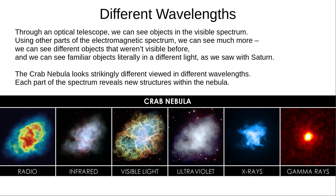Until the 20th century, astronomers only had access to visible light, a tiny portion of the electromagnetic spectrum. Modern technology lets us use the whole of the spectrum. We can see objects we couldn't see before, and we can see familiar objects in literally a different light, as we just saw with Saturn. Here we can see the Crab Nebula in six different parts of the spectrum. Each image shows different details and new structures.